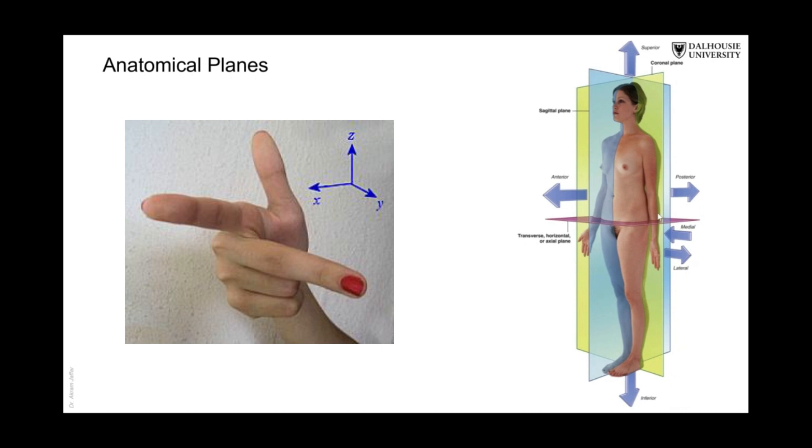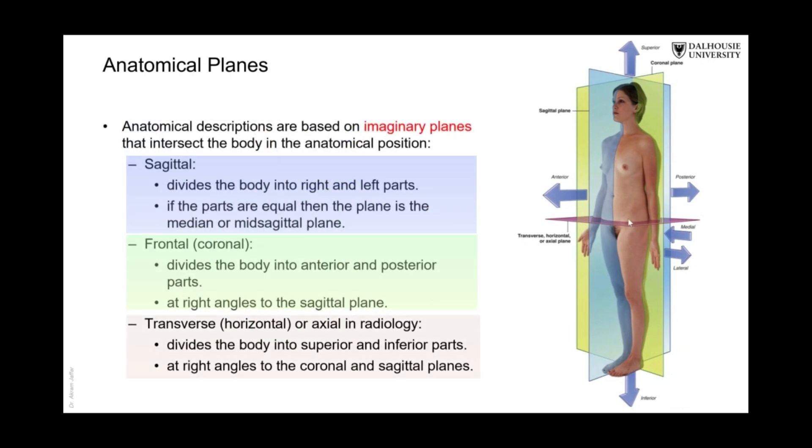So the horizontal or transverse plane, sometimes it's called axial plane. If you are dealing with an x-ray, particularly a CT scan or an MRI, usually radiologists use the term axial plane. It cuts the body or it cuts the part of the body in a horizontal direction.